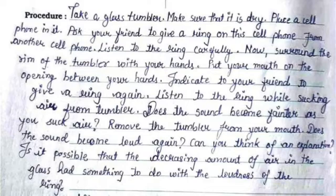Now surround the rim of the tumbler with your hands, put your mouth on the opening between your hands, indicate to your friend to give a ring again, listen to the ring while sucking air from the tumbler. Does the sound become fainter as you suck air? Remove the tumbler from your mouth — does the sound become loud again?